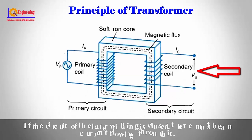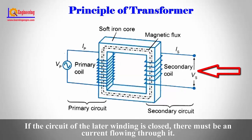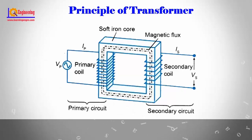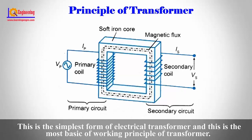If the circuit of the secondary winding is closed, there must be a current flowing through it. This is the simplest form of an electrical transformer, and this is the most basic working principle of a transformer.